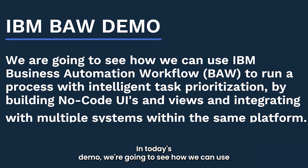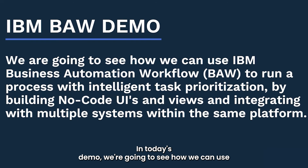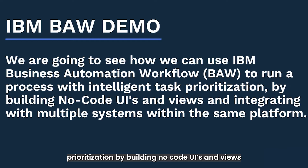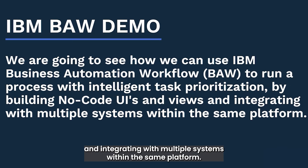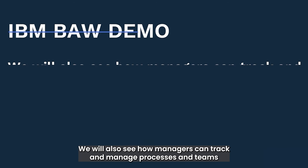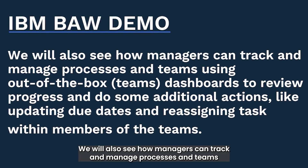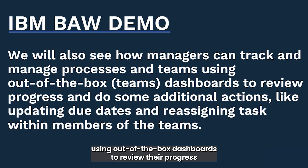In today's demo we're going to see how we can use IBM Business Automation Workflow to run a process with intelligent task prioritization by building no-code UIs and views and integrating with multiple systems within the same platform. We will also see how managers can track and manage processes in teams using out-of-the-box dashboards to review progress and perform additional actions.